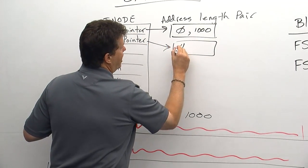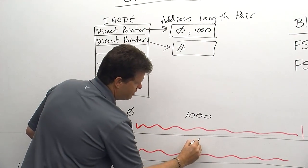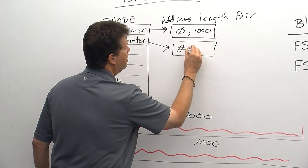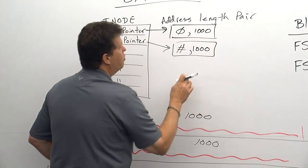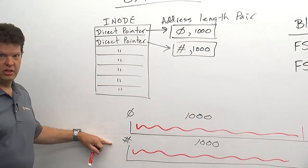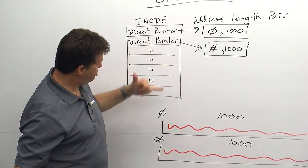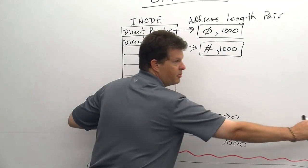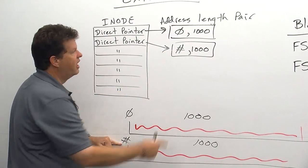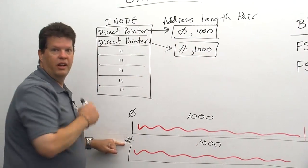So whatever the block address, starting address here is, and whatever the length is, we'll say it's a thousand as well, we'll have another extent to manage this. So when we go out to look for this file, we're going to go to this block, starting address, run a thousand blocks into memory, and then we can seek to this address and run the rest of it into memory. We get the whole file loaded.